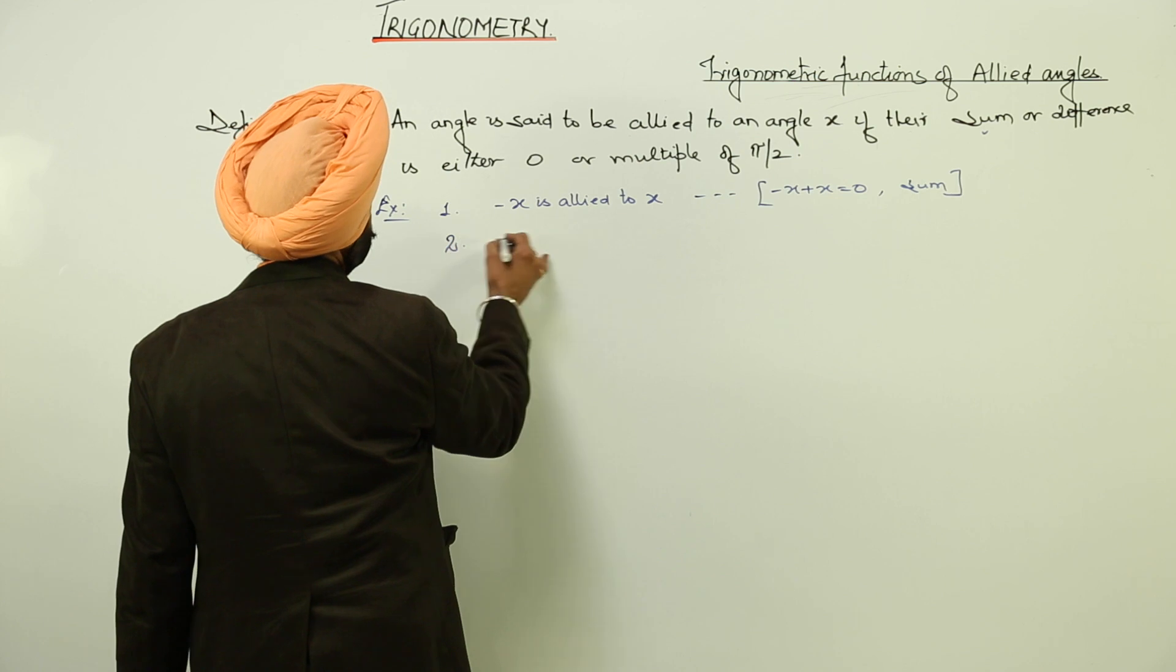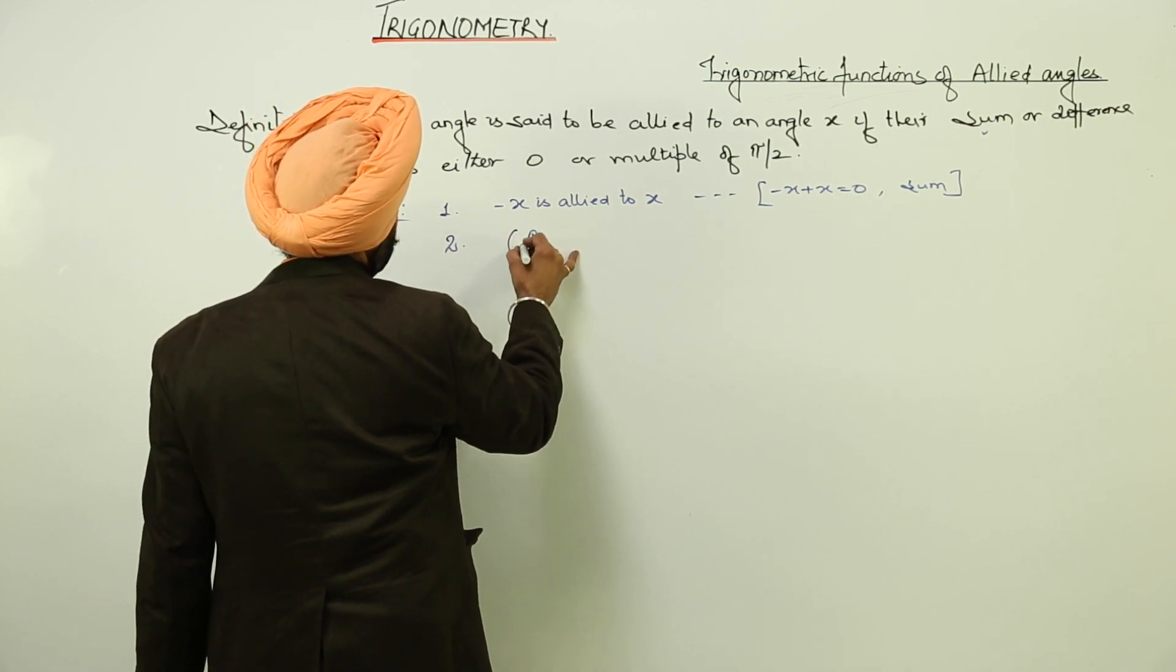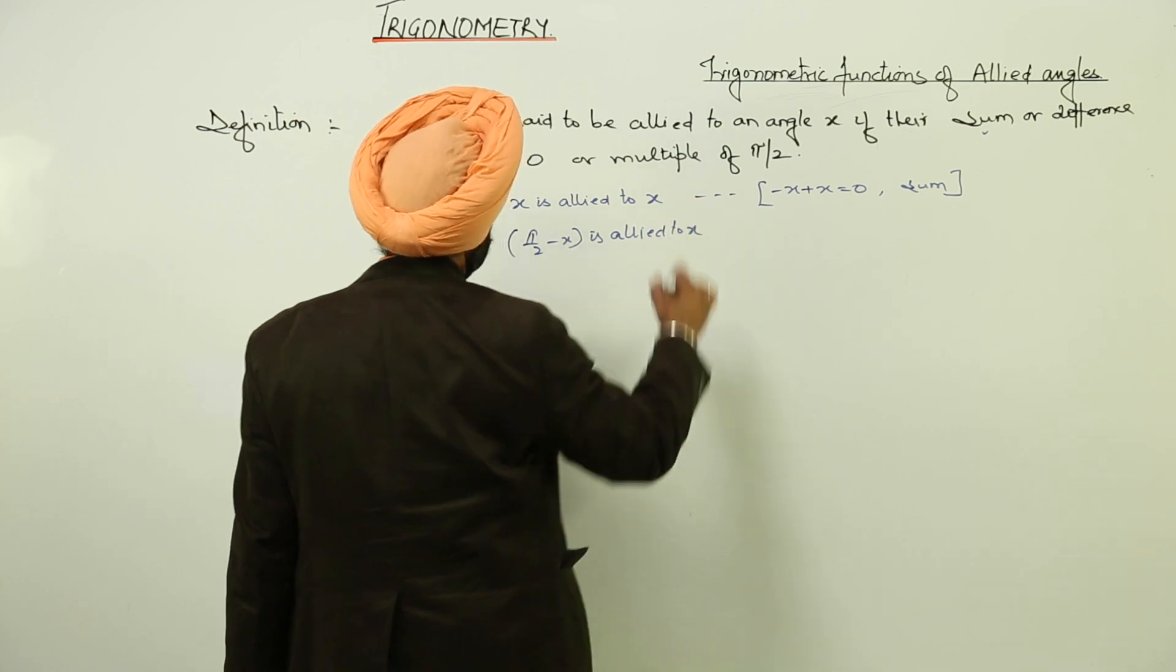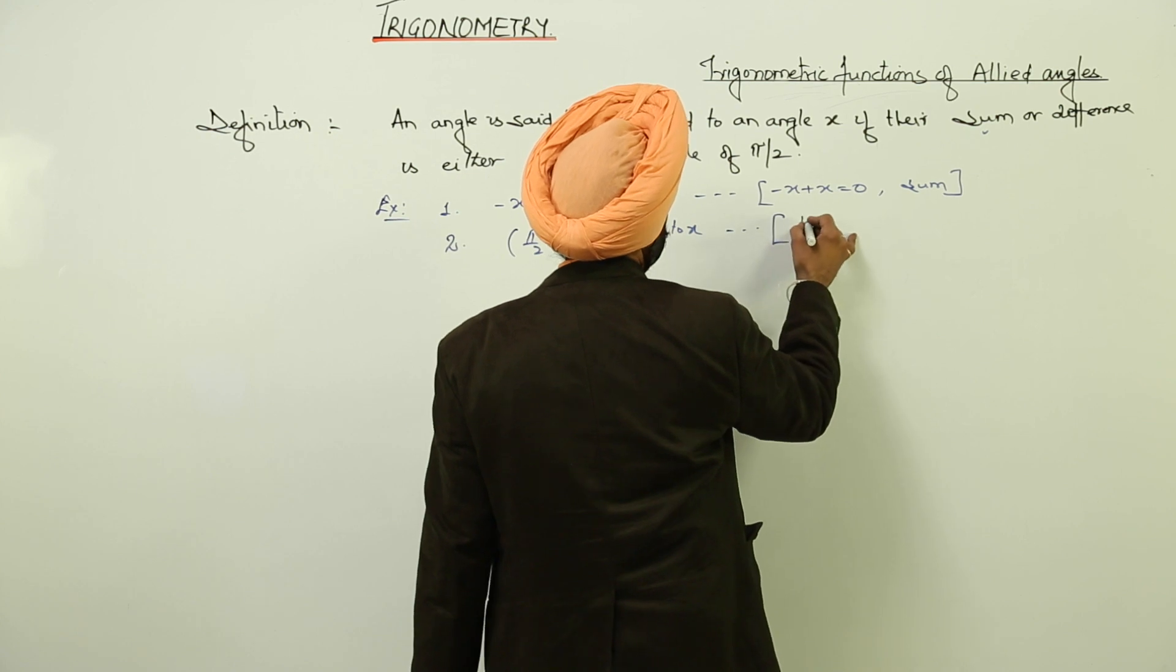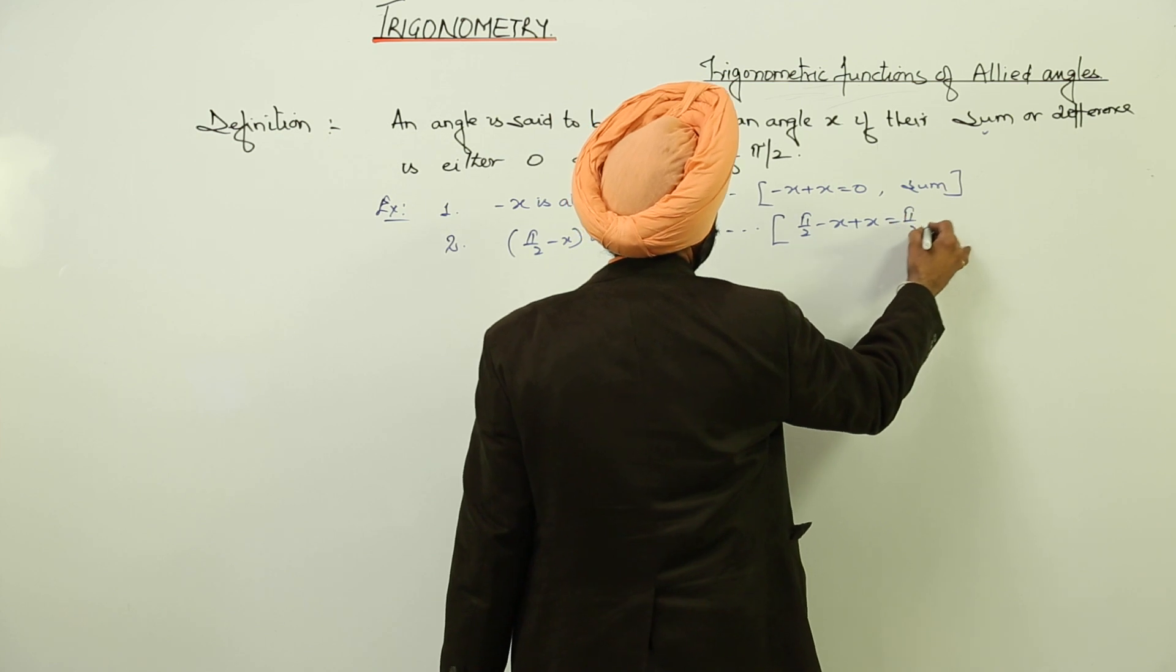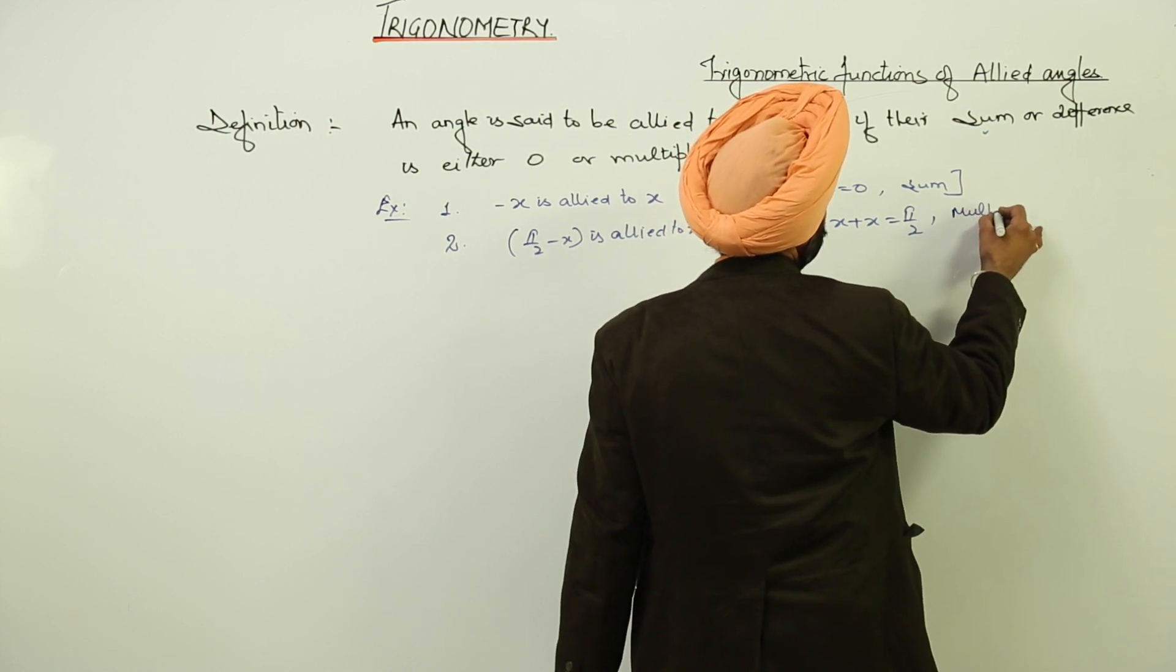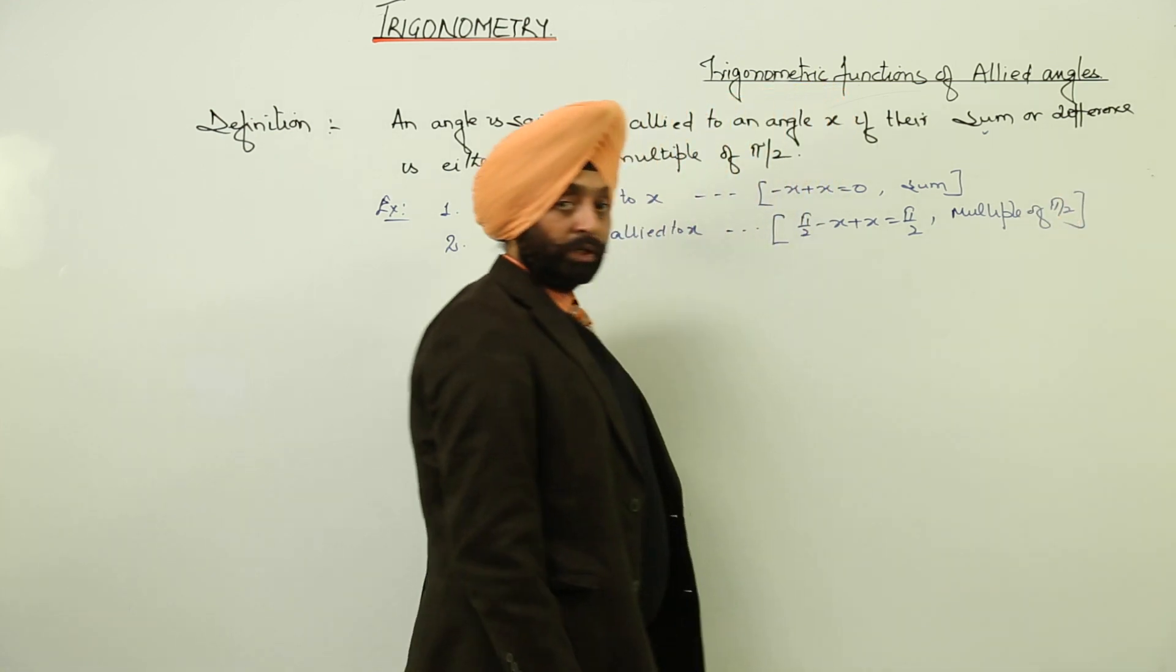Second example can be, suppose pi by 2 negative of x is allied to x. How? Again, using the sum pi by 2 negative of x plus x is equal to pi by 2. We are left with pi by 2, multiple of pi by 2. So this is allied.